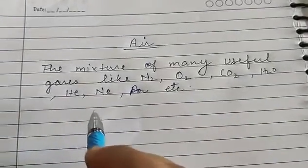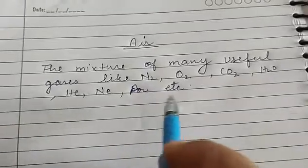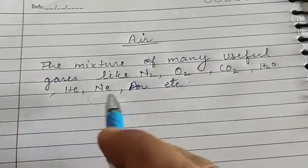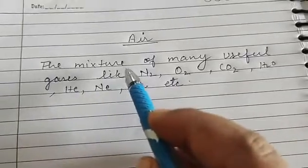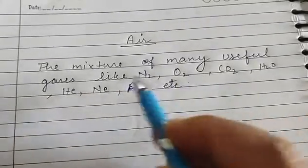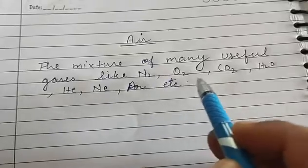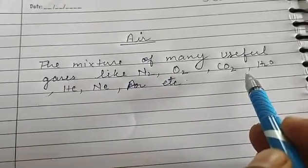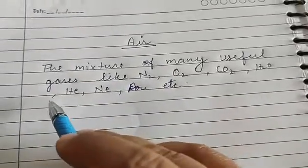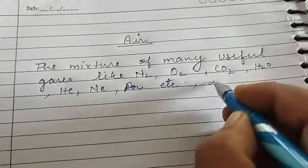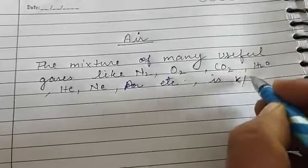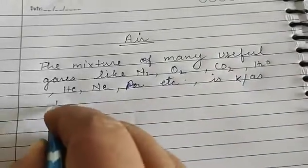So you can say that the mixture of many useful gases like N2, O2, CO2, water vapour, helium, neon, argon, etc. is known as air. This is the exact definition of air.